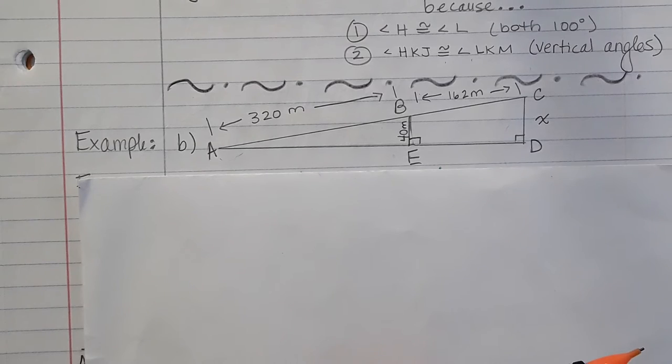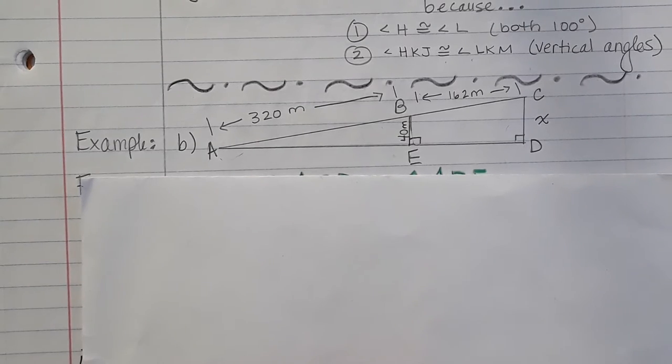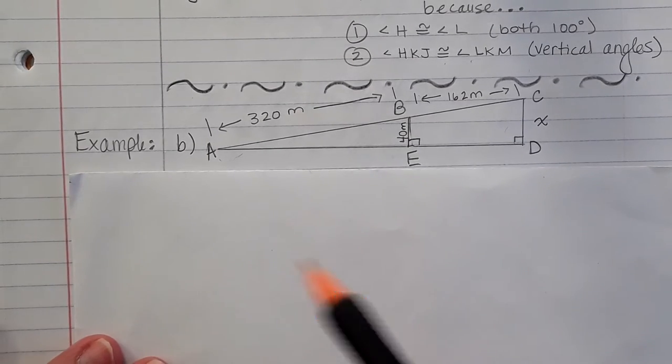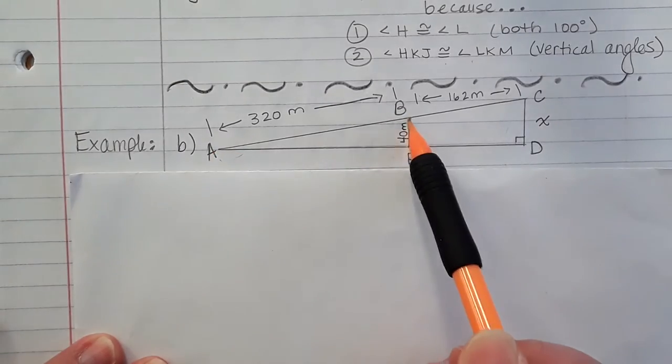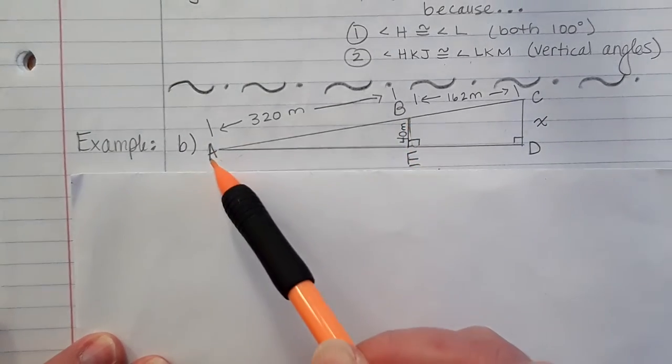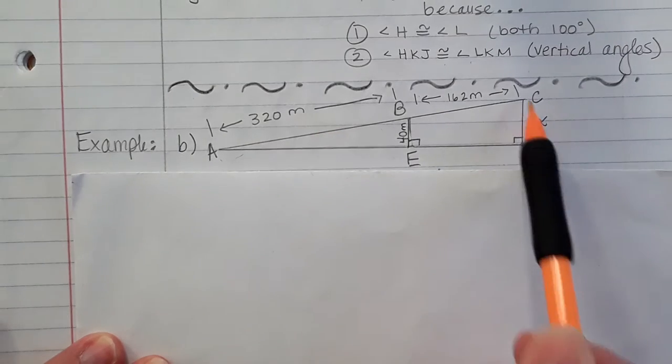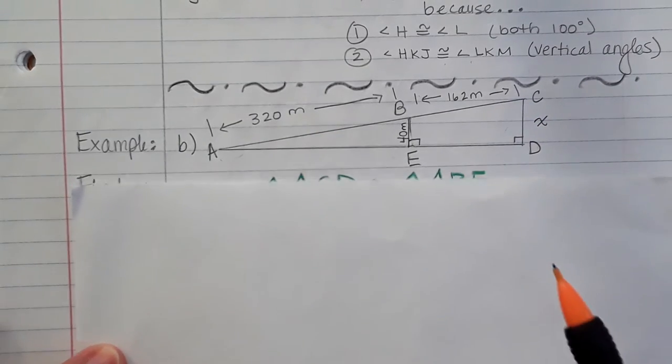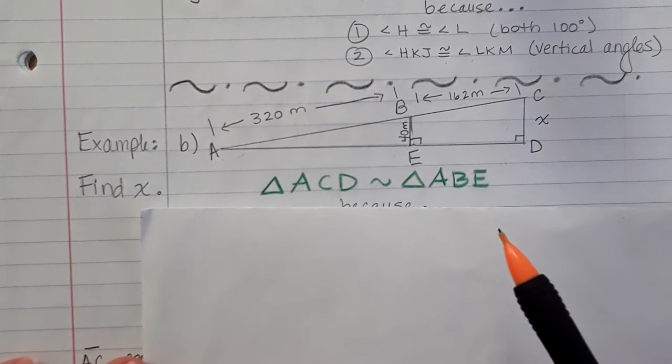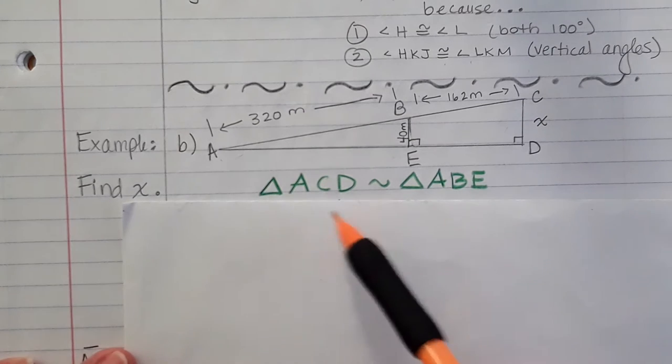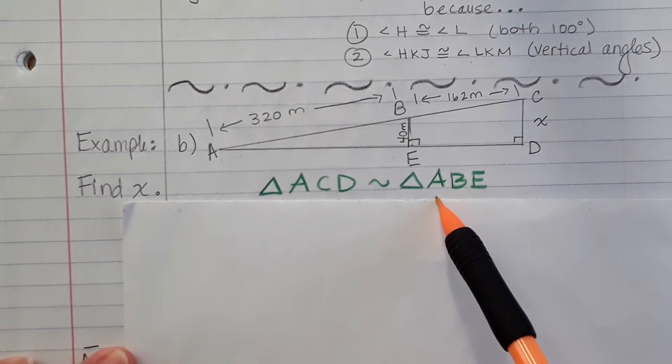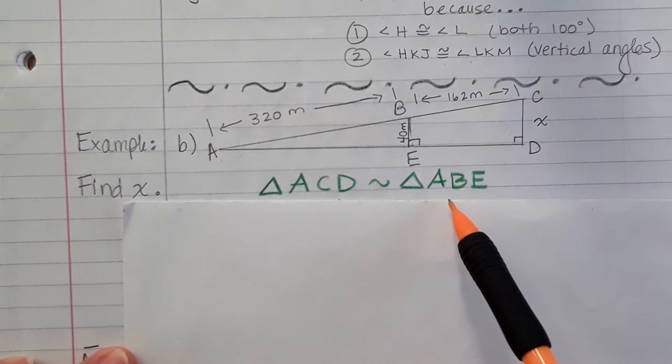Here is an example. And we actually have two triangles here. We have triangles ABE and triangles ACD. So we want to find X. I know that these triangles are similar because they have two angles that are congruent.